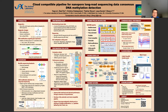However, bisulfite sequencing also has some shortcomings. Firstly, it will damage the DNA sequences. Secondly, it is short-range, so it contains uneven genome coverage and inherent biases. Lastly, it cannot distinguish 5mC and 5hmC.